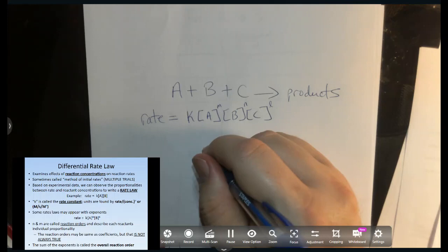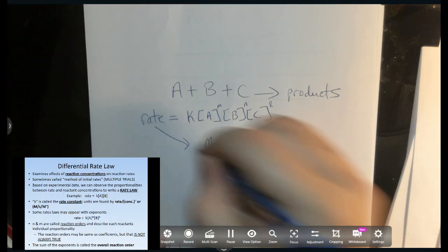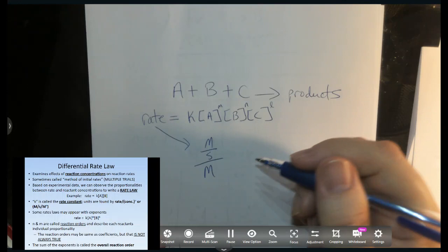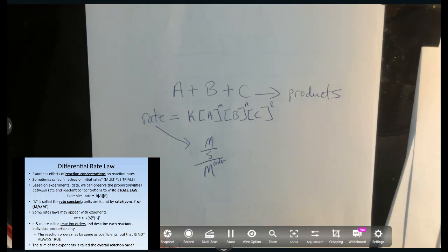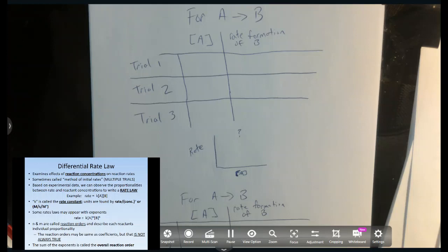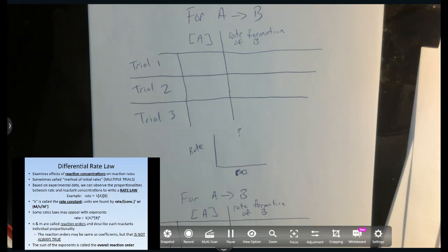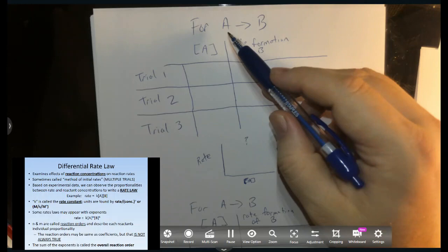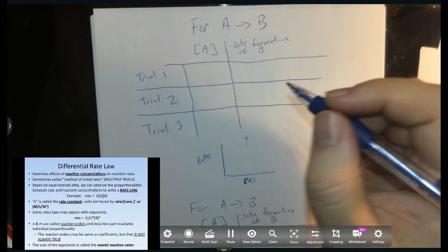The overall order is important because the units of the rate constant k depend on it. The units of rate are molarity per second. To find the units of k, take that molarity per second and divide it by molarity to the overall reaction order. That's how we find the units of k — we'll get to that with a problem. But first, let's go through some simple math before we get into the full problems.